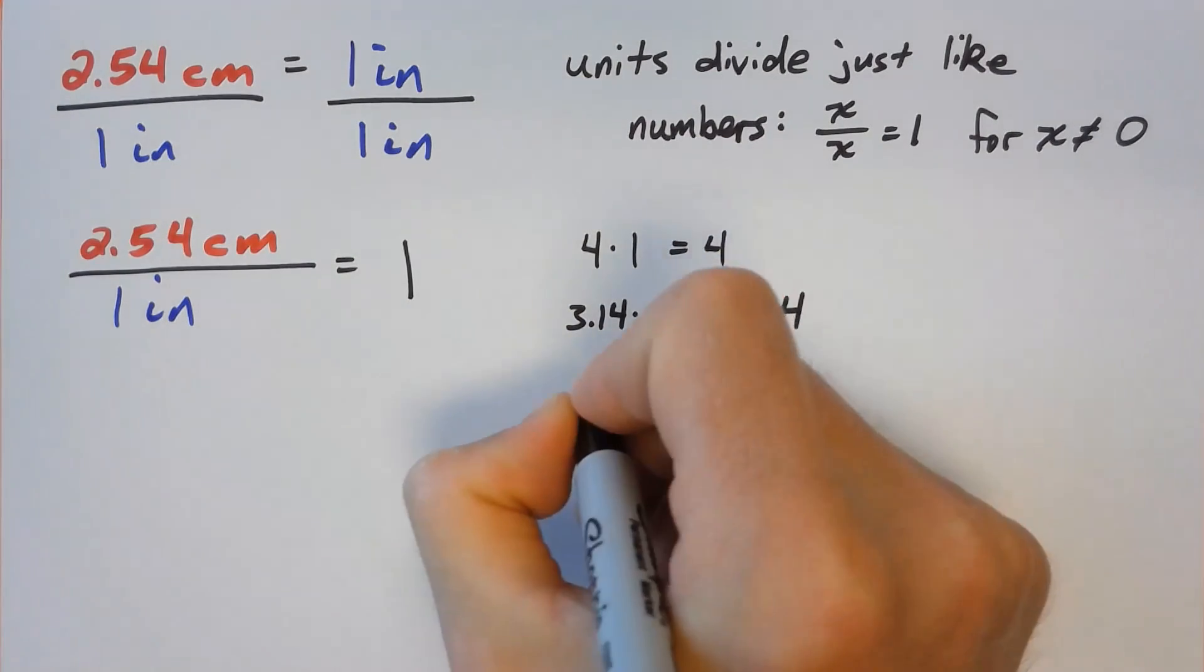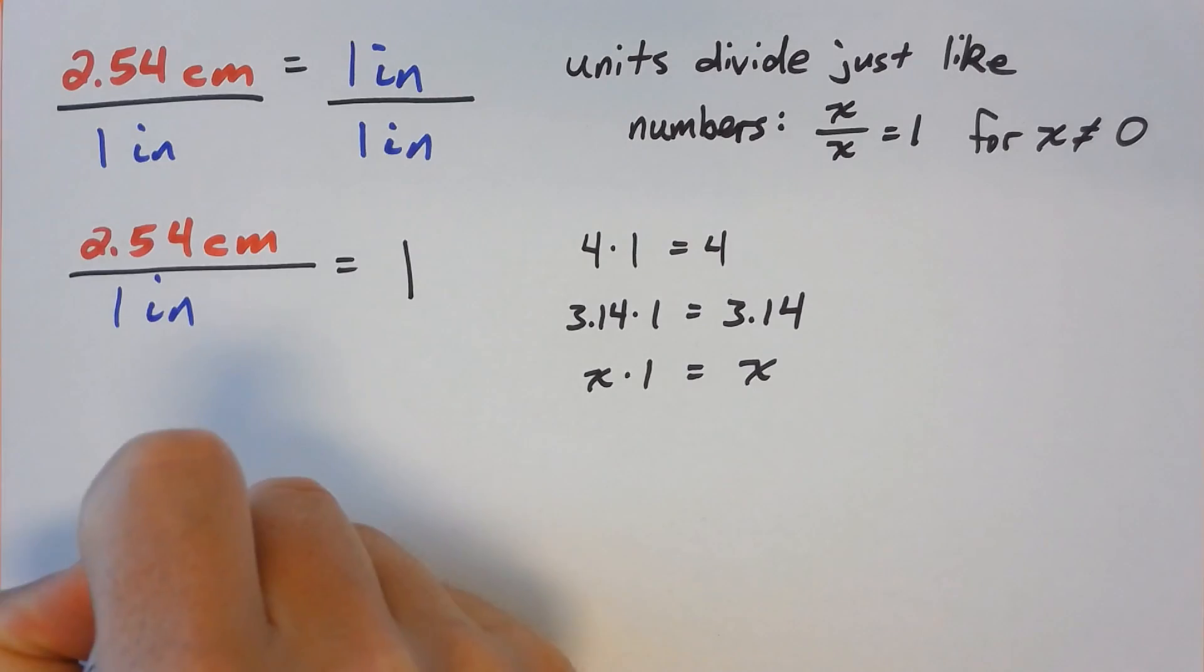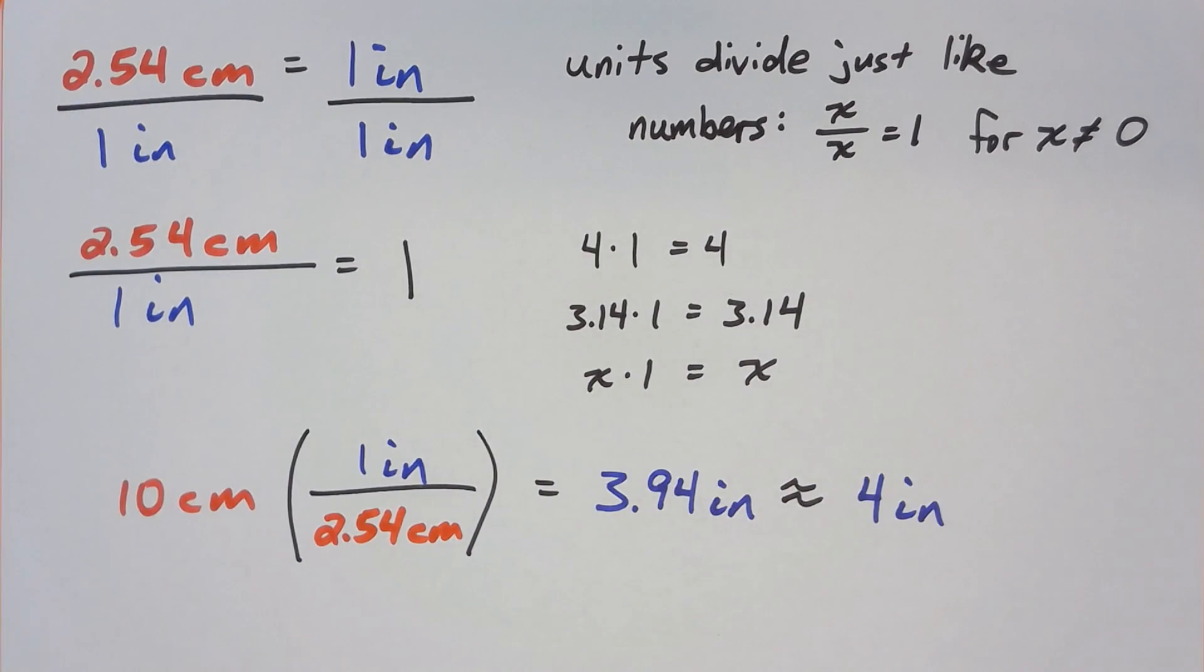Let's say that we want to find how many inches are equal to 10 centimeters. We start with 10 centimeters and multiply by the inverse of the conversion factor, which is also 1 since the inverse of 1 is 1. The centimeters cancel and we are left with 4 inches to one significant figure.